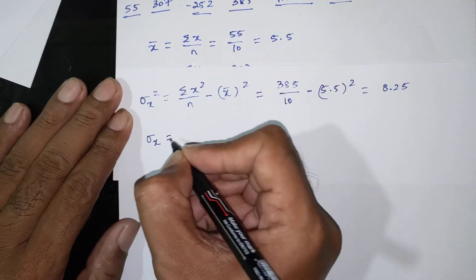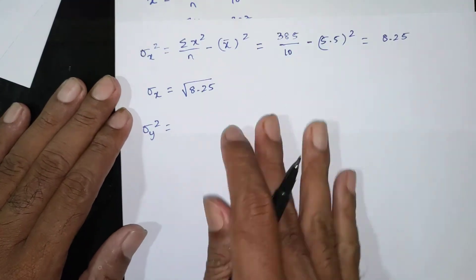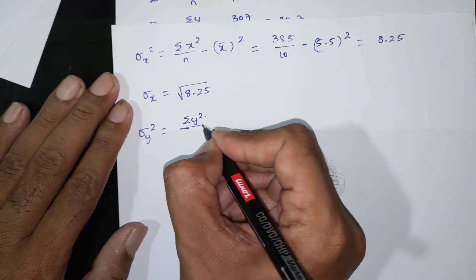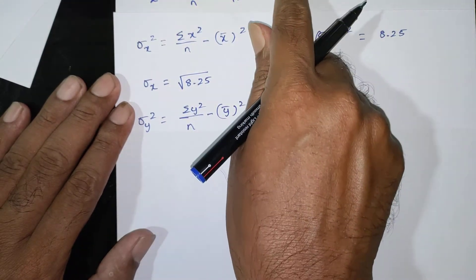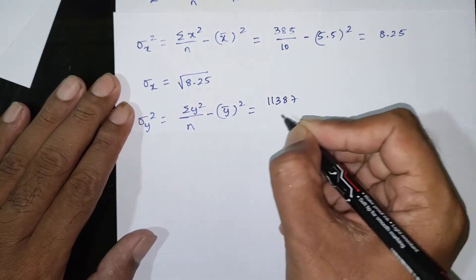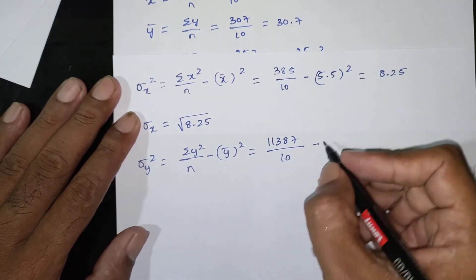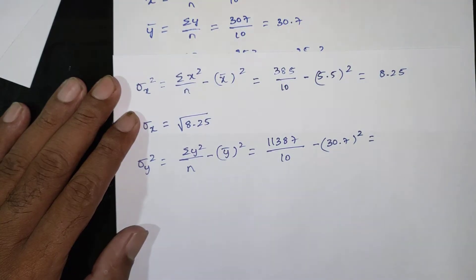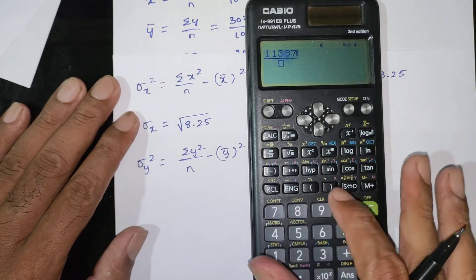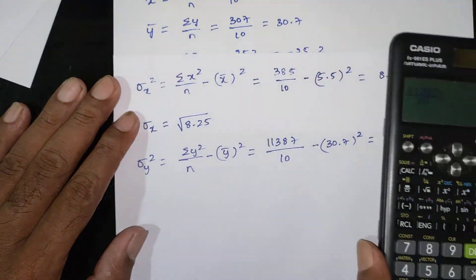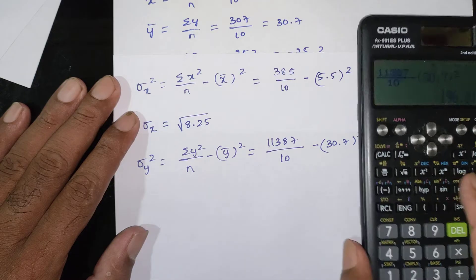X bar = 5.5. Sigma x = root of 8.25. Next, sigma y square formula is: summation of y square divided by n, minus y bar whole square. Summation of y square = 11387, divided by 10; y bar = 35.2. Sigma y square = 196.21.